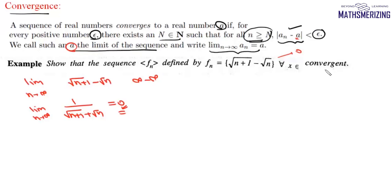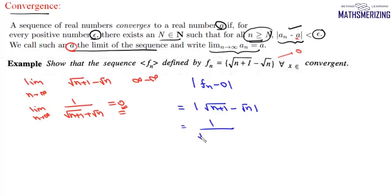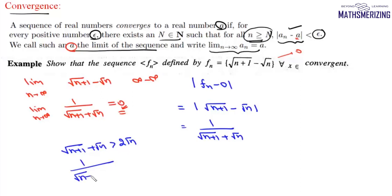Now we can write |fₙ − 0| = |√(n+1) − √n|. Rationalizing gives 1/(√(n+1) + √n). Since √(n+1) + √n > 2√n, we get 1/(√(n+1) + √n) < 1/(2√n). So this expression is less than 1/(2√n), and we need this to be less than epsilon.